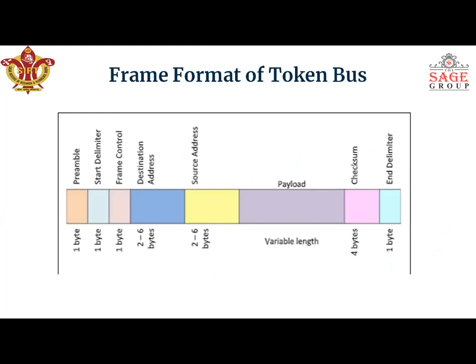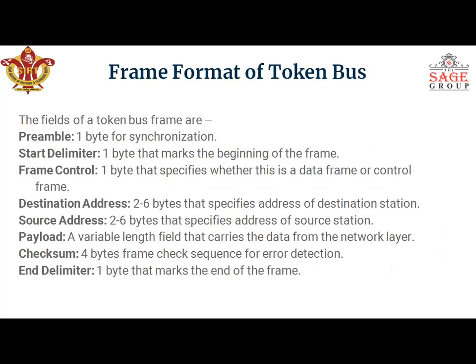Physically it is a Token Bus, but logically it is a Token Ring. This is the frame format of Token Bus. There are different fields: preamble, start delimiter, frame control, destination address, source address, payload, checksum, and end delimiter. The payload has a variable length, and each field has a different size — for example, preamble is one byte and start delimiter is one byte.